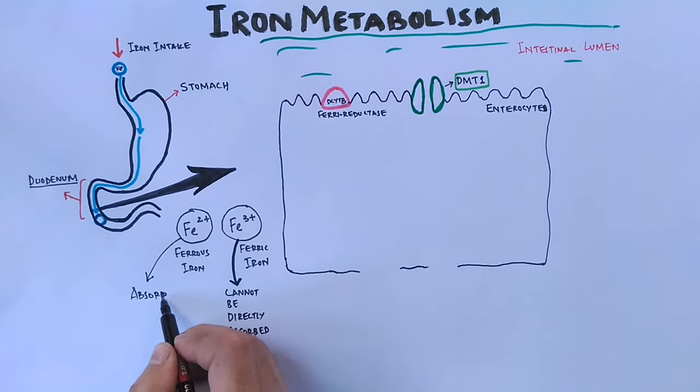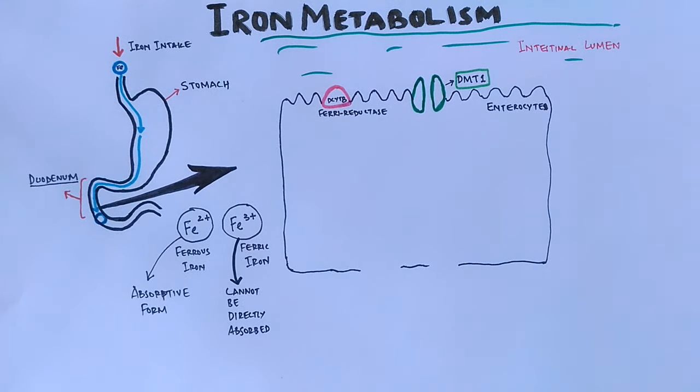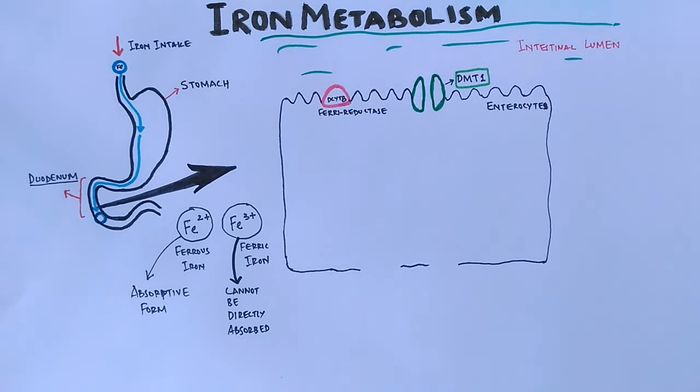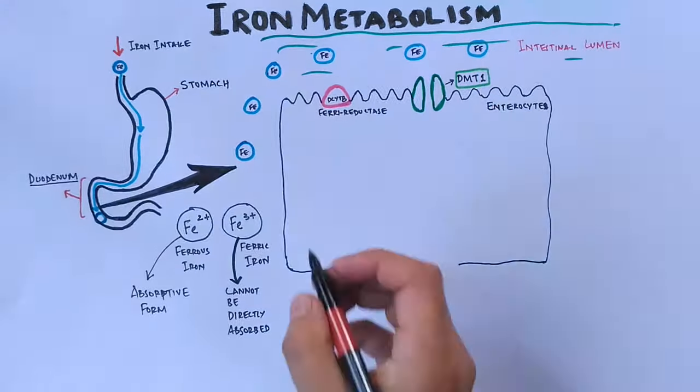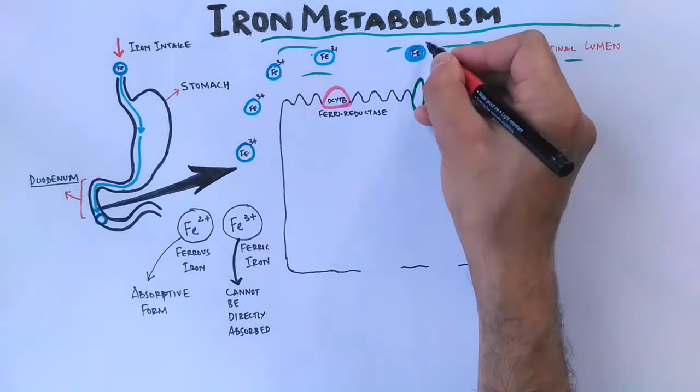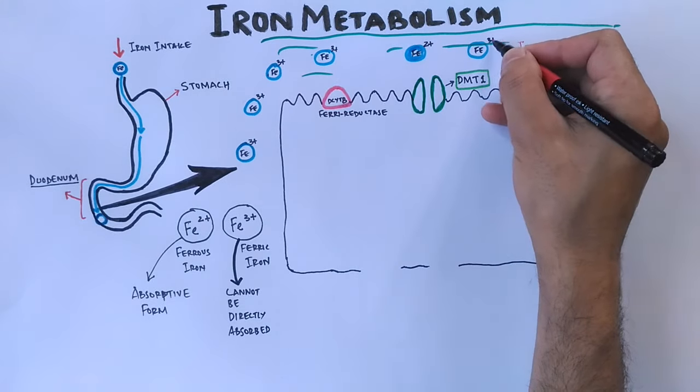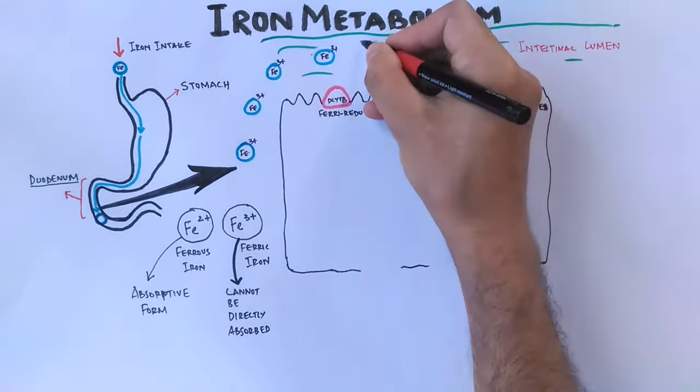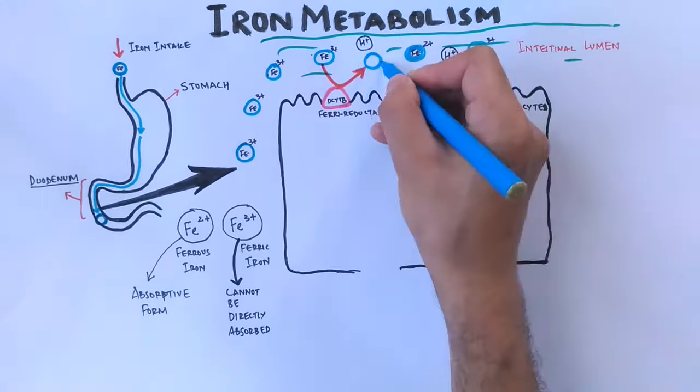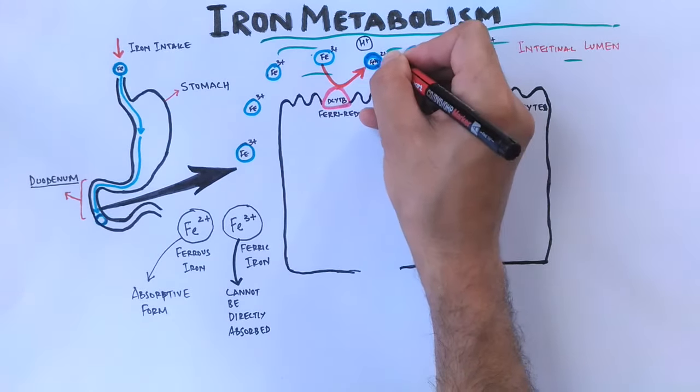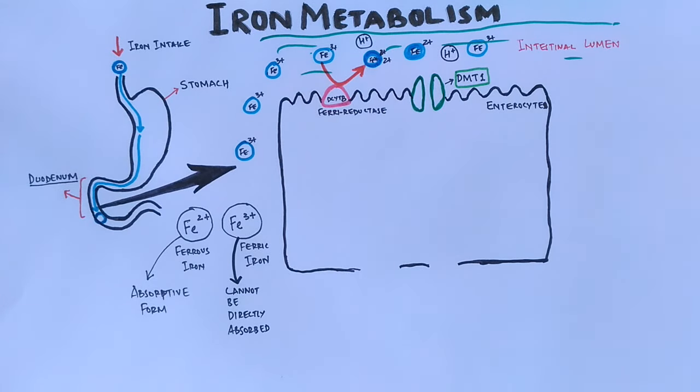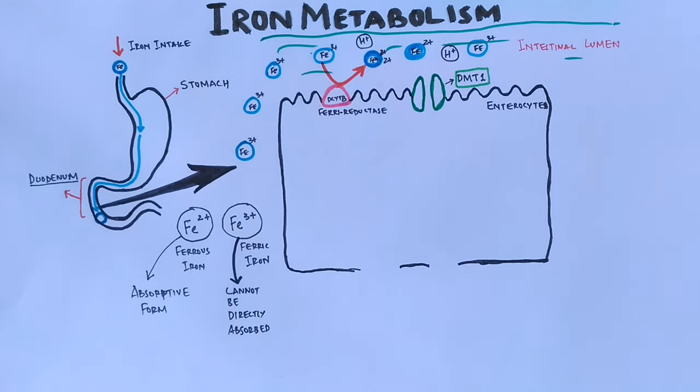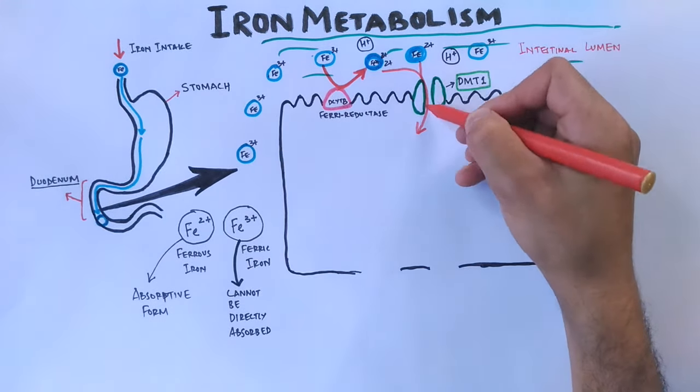To start the process, we have both types of ions present in the intestinal lumen: Fe2+ ions as well as Fe3+ ions, shown as blue circles in the diagram. Now first of all, the ferric iron, that is the Fe3+ ion, is converted into ferrous iron, that's Fe2+ ion. This conversion is mediated by DcytB enzyme, that's ferrireductase.